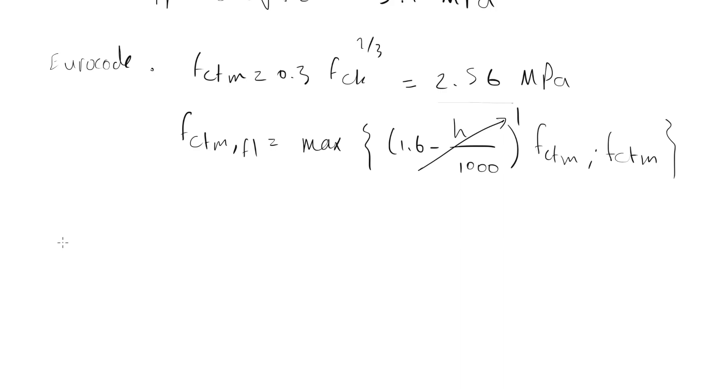And we have the equation F equals to MC over I. Now C equals to H over 2. And the second moment of area equals to BH cube over 12. Now putting these values in this formula, we can say F equals to 6M divided by BH squared.